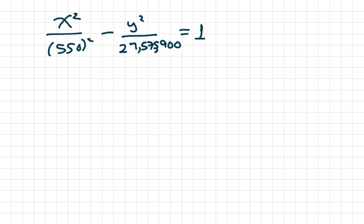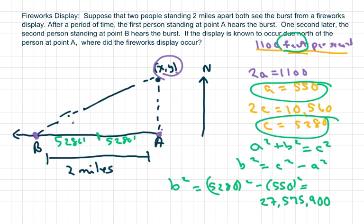Since the fireworks display is due north of the individual A, we're going to let X equal the 5,280, substitute and solve for Y. So basically, right here, since we have this 5,280, letting X equal 5,280, and now we just have to find the Y and put it in there. Okay.